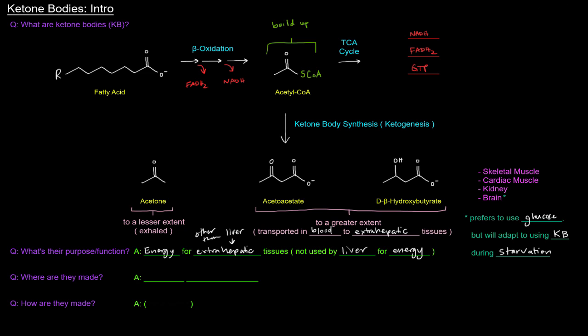Now the question is where are they made? If they're transported in the blood to extra hepatic tissues, maybe I've already given it away with hepatic. They're made in the liver, specifically in the liver mitochondria. That should make sense given what we've already talked about so far.